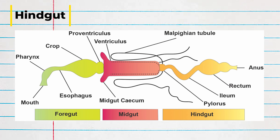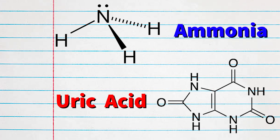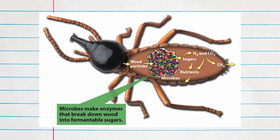In the hindgut, water and vital salts are reabsorbed back into the body. The structures in the hindgut include the ileum, the rectum, and the anus. Additionally, hair-like extensions on the border of the hindgut and the midgut, as well as the Malpighian tubules, dump urine into the hindgut. The nitrogenous waste of insects is shed as ammonia in aquatic insects and as uric acid in terrestrial insects. An adaptation present in some insects with symbiotic microbes is the fermentation chamber, which houses the beneficial organisms and allows them to process or produce food.